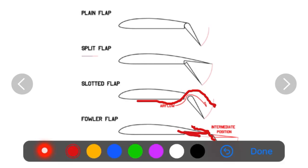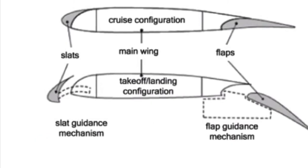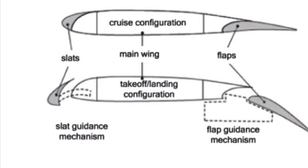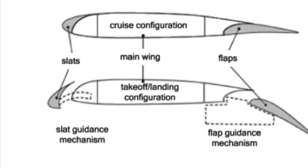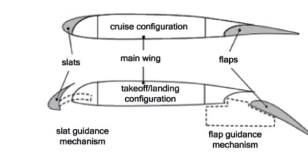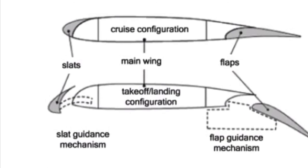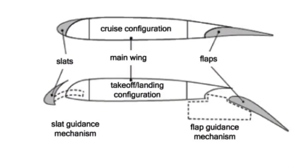Next let us look at slats. Slats extend from the leading edge of the wing and their function is very similar to that of flaps. The types of slats are: automatic slats, which extend automatically when aerodynamic forces on the wing are reduced and retract when they increase; fixed slats, which are permanently extended and sometimes referred to as slots, usually used on low speed aircraft; and powered slats, whose extension is controlled by the pilot — commonly used in airliners.